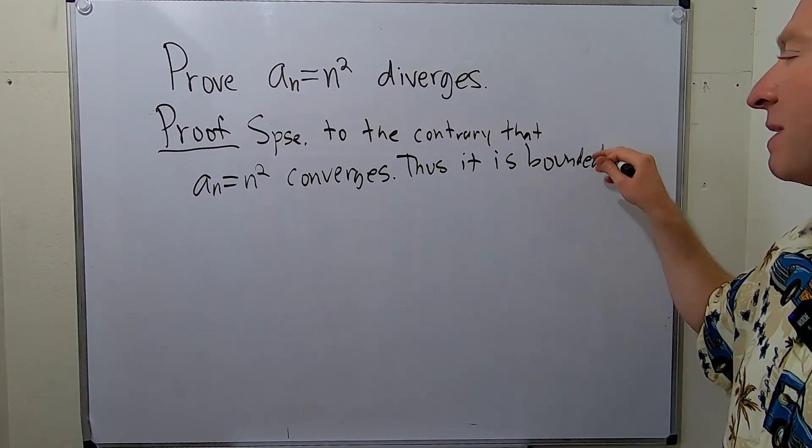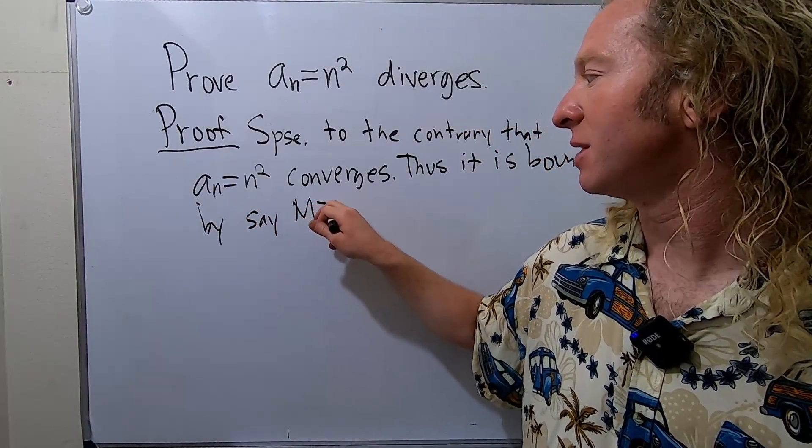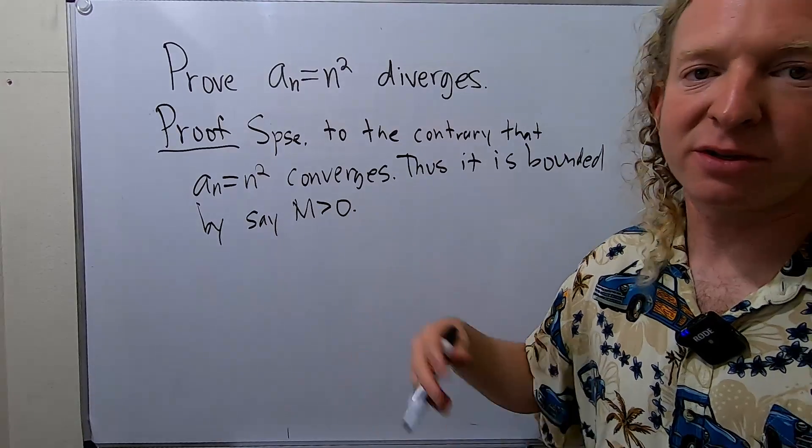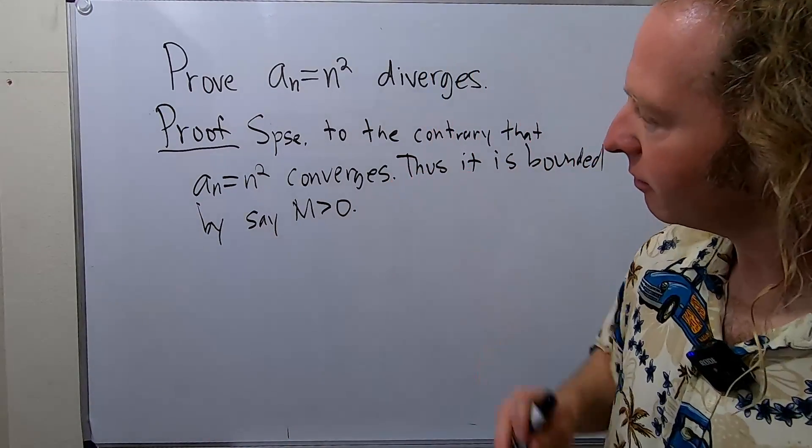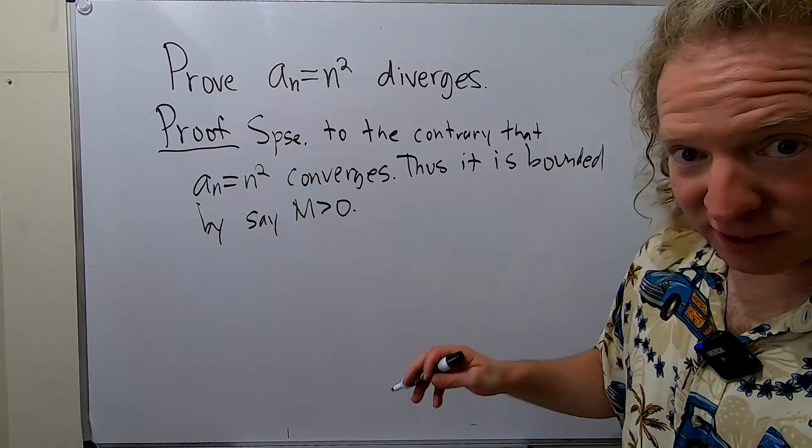Let's say it's bounded by some positive number. We can assume it's positive because if it's not, we can just add a number and make it positive. So suppose it's bounded by some M.